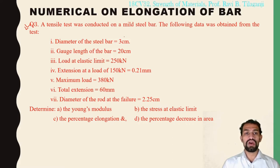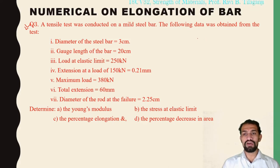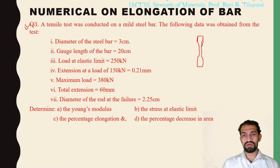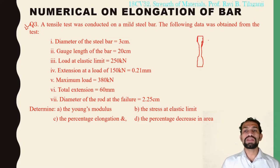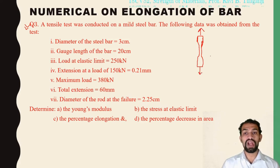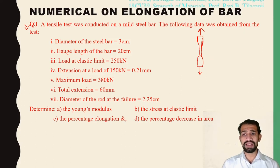A tensile test was conducted on a mild steel bar and the following data was obtained from the test. The specimen has a tapering end and a gripping end. Tension is pulled in both directions, and we need to remember which particular section we have to consider.